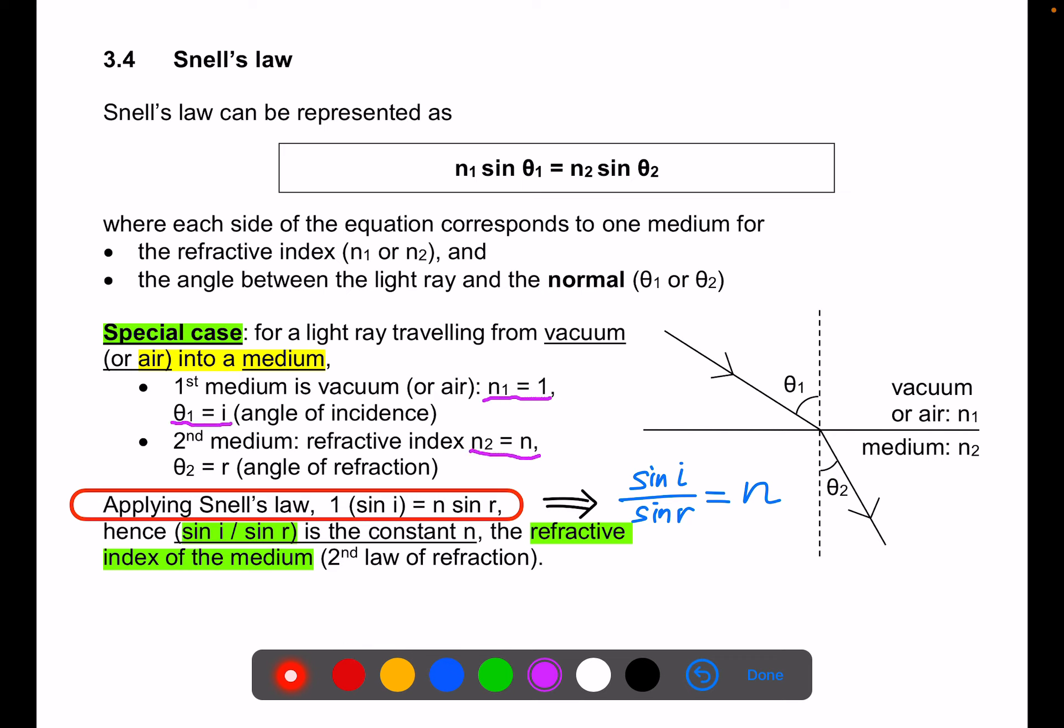Theta 1 is i, theta 2 is r. We'll substitute this into Snell's law. We end up with relationship between i, r, and n.